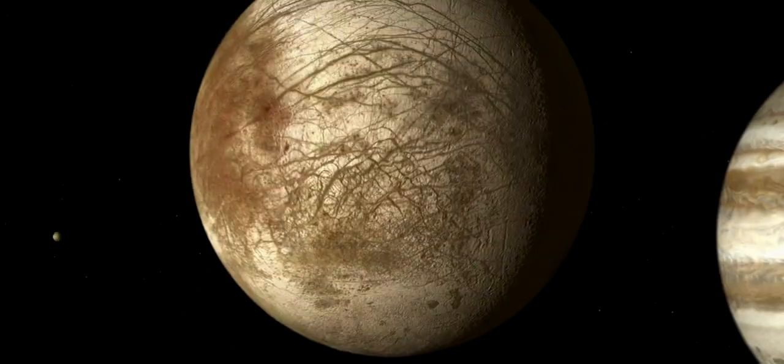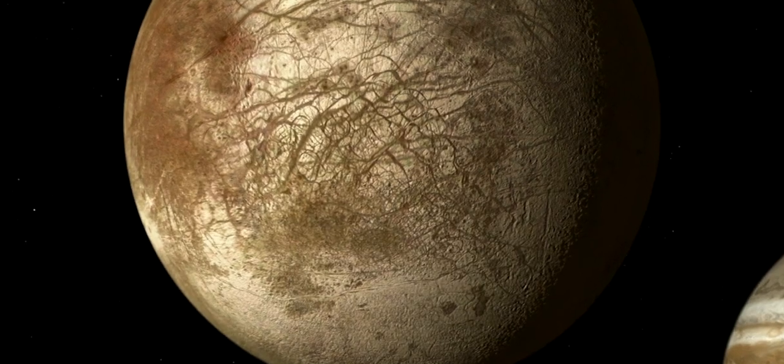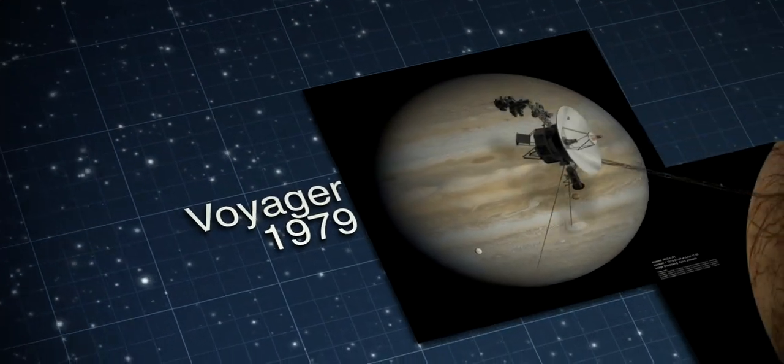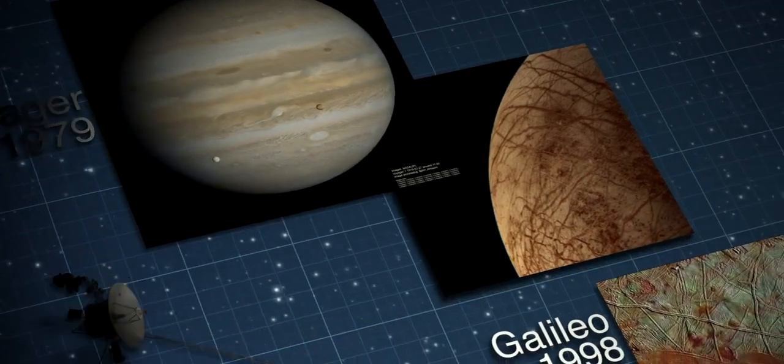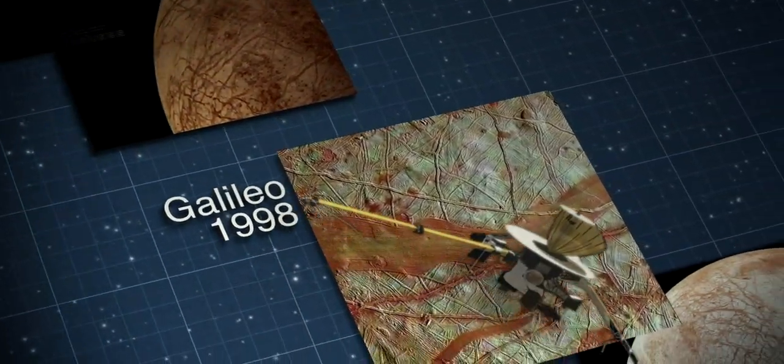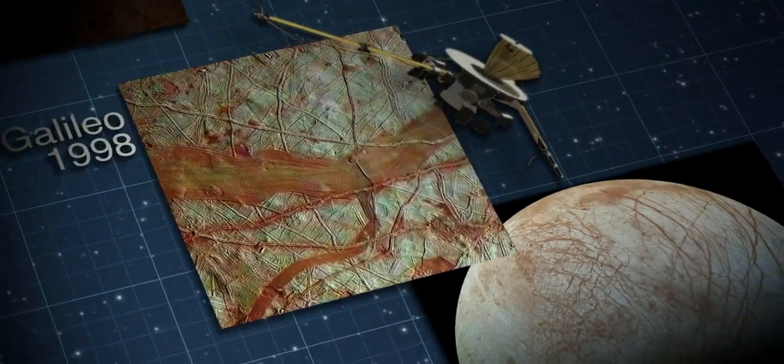So how do we think we know that Europa's ocean exists? Well, it's a combination of using telescopes on the ground and having spacecraft that have flown by Europa and collected data about the surface, about the interior structure, and about the magnetic field around Europa. The combination of those data sets leads us to a high degree of confidence that this global liquid water H2O ocean is there today and has been there for much of the history of the solar system.